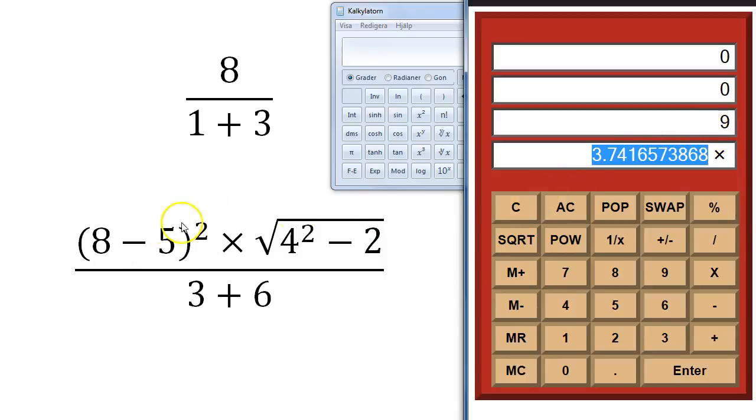So we have 9, this part. We have 3.74, this part. And I want to multiply them. So I simply press the multiplication key here.